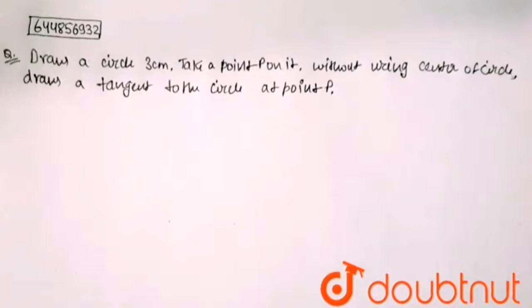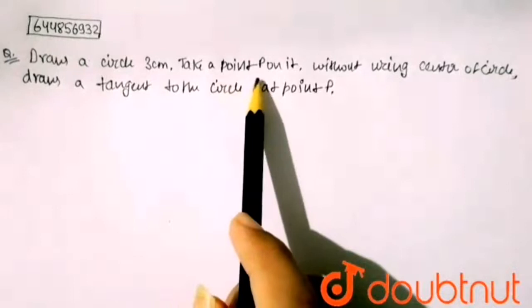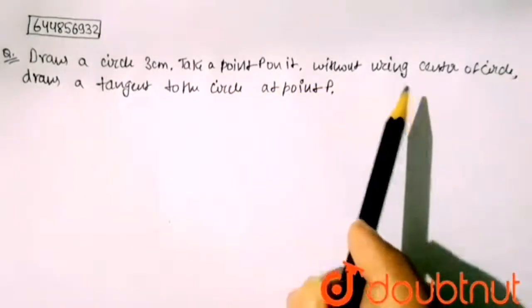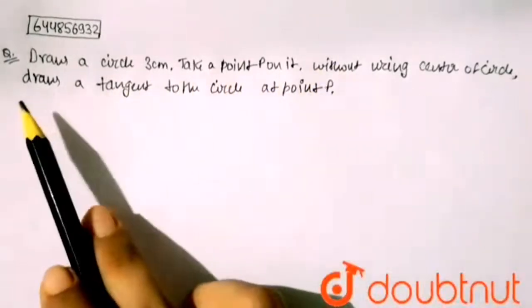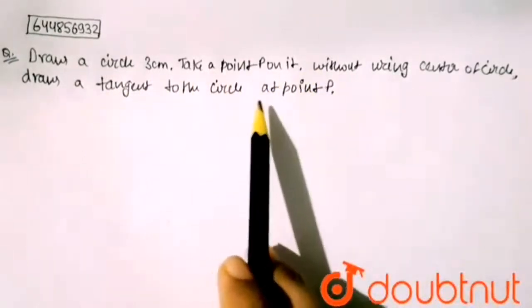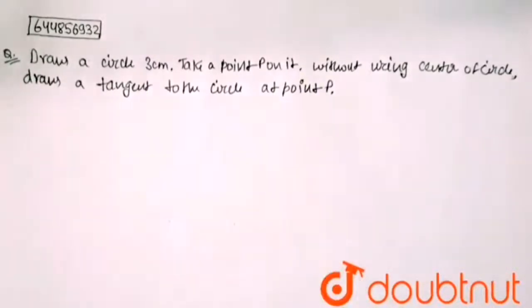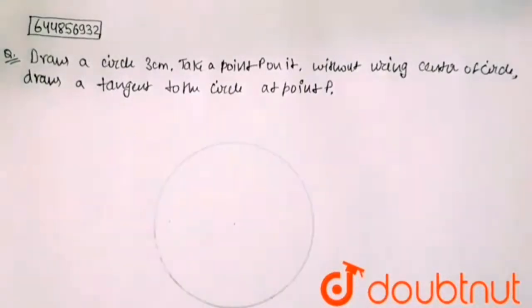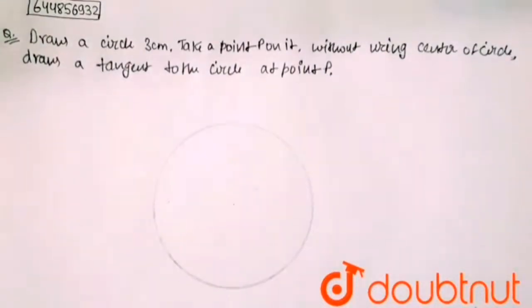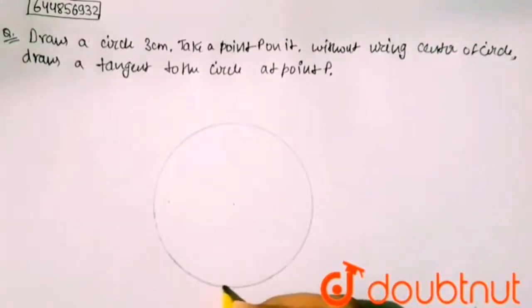Hello friends. In this question, it is given that: draw a circle of three centimeters, take a point P on it without using the center of the circle, then draw a tangent to the circle at point P. So here, first I have to draw the three centimeter circle and then take the point P.